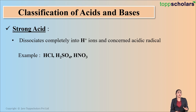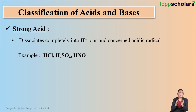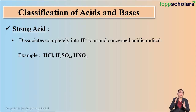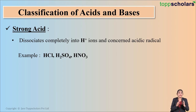Let us take an example to understand this. If I have 100 molecules of HCl and dissolve them in water, since strong acid is the one which dissociates completely, all 100 molecules of HCl dissociate. All 100 molecules dissociate to give H+ ions and the concerned acidic radical, which means that HCl is a strong acid since it undergoes complete dissociation.